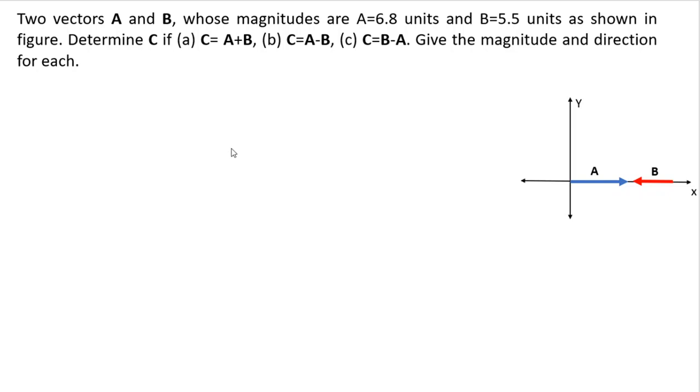Part A is to find a vector when you add both vectors A and B. C is when you find the difference between them, A minus B. And then C part is B minus A. We have to determine the magnitude and direction for each case.